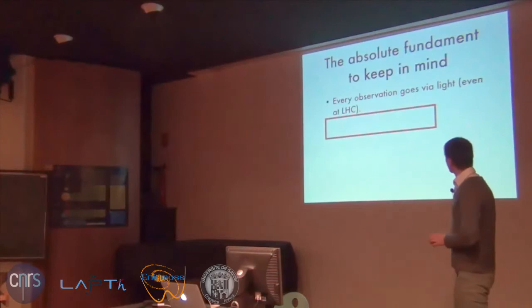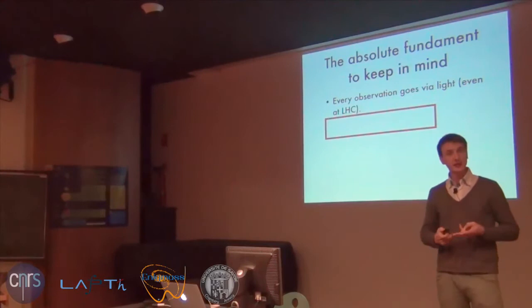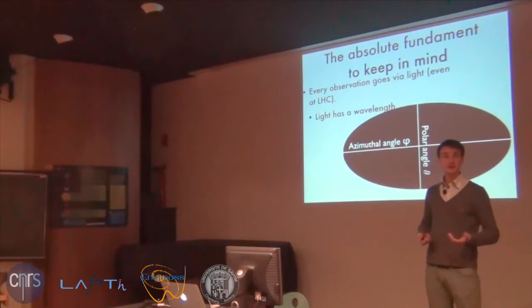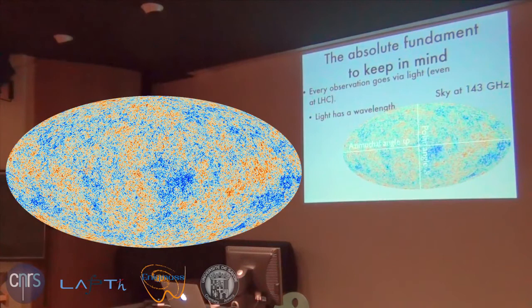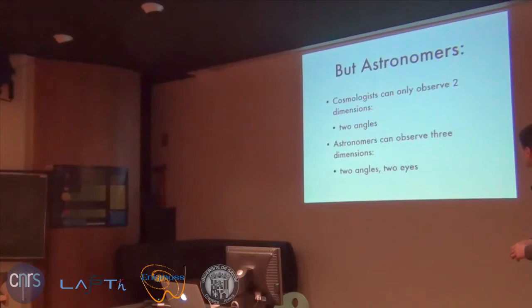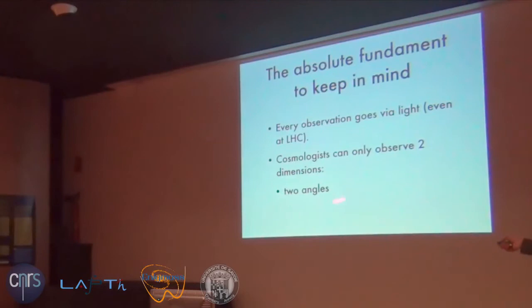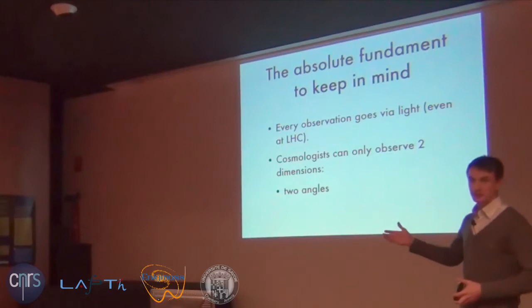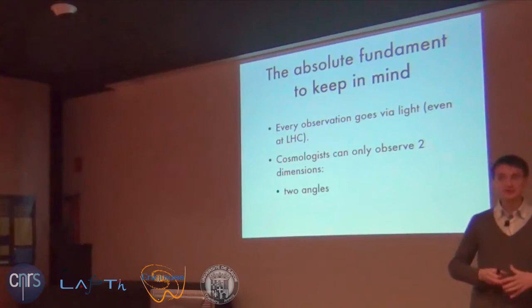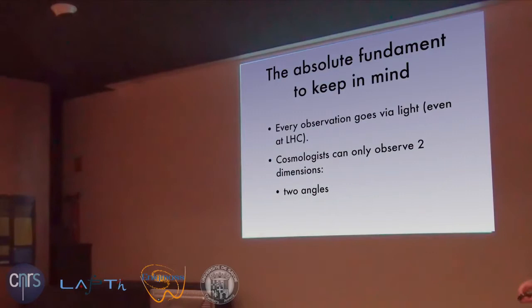We observe only two dimensions and every observation goes via light. Light has a wavelength, so we can cut observations into different wavelengths. For example, here is a picture of the sky at 143 GHz — that is the cleanest frequency at which you can observe the cosmic microwave background. We can observe light at wavelengths and we can observe angles, and that's really the only thing a cosmologist can observe. Everything in the rest of the story is based on observations of only two angles and wavelengths.